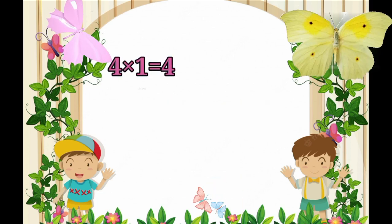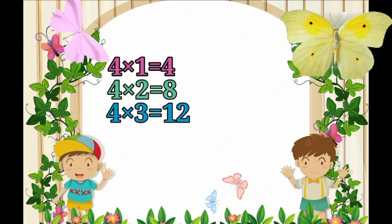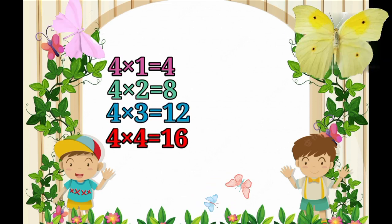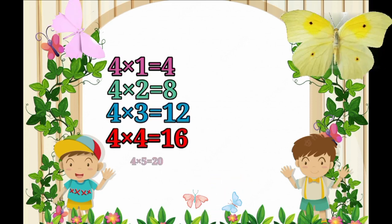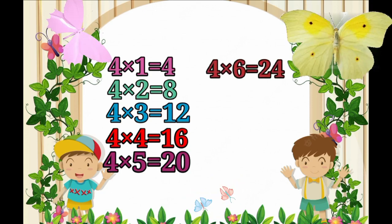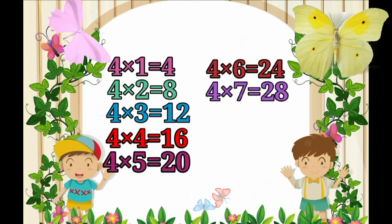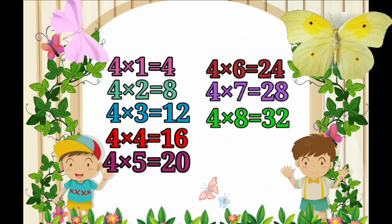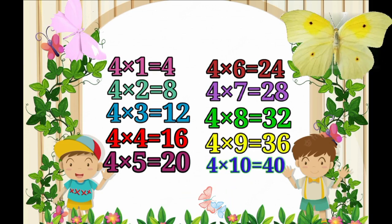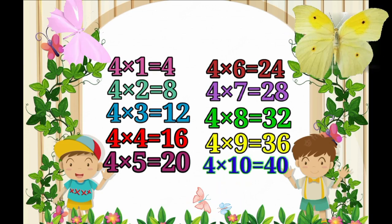Table of 4 recap: 4×1=4, 4×2=8, 4×3=12, 4×4=16, 4×5=20, 4×6=24, 4×7=28, 4×8=32, 4×9=36, 4×10=40.